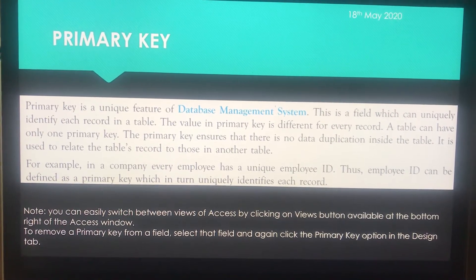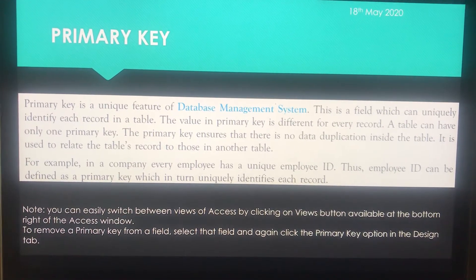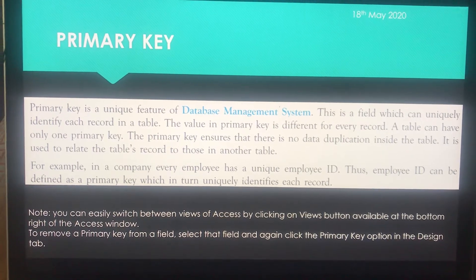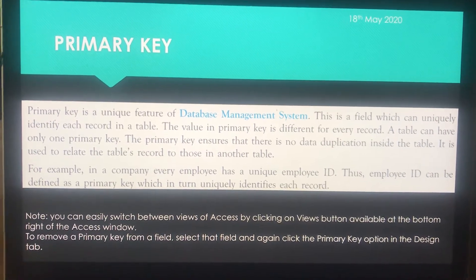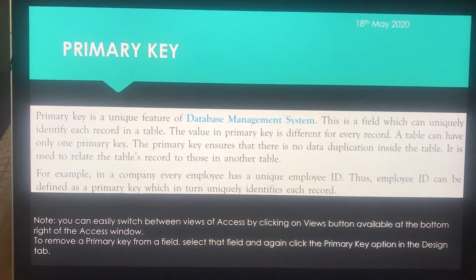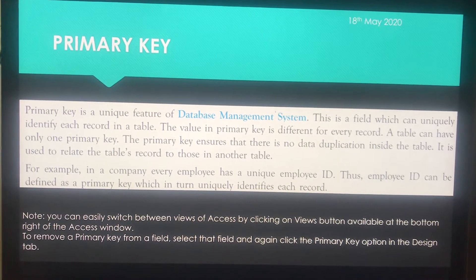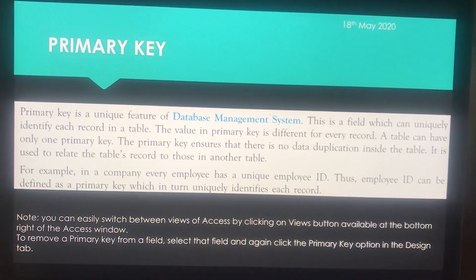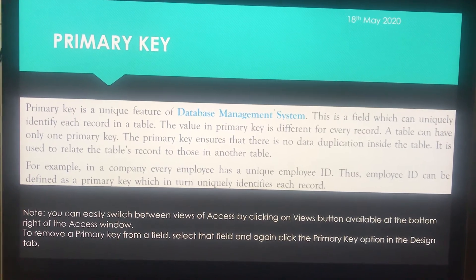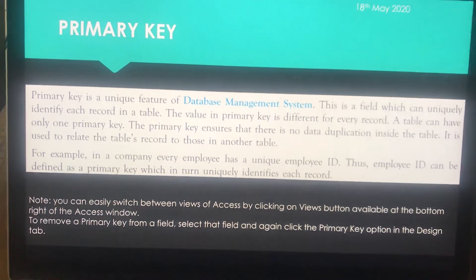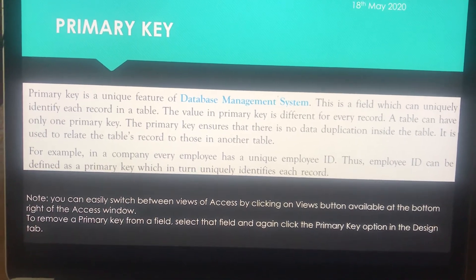For example, in a company every employee has a unique employee ID. Similarly, as a student, every student has a different admission number — no two students can have the same admission number. That is your uniqueness in the school. In the same way, in a company every employee has a unique employee ID, and that employee ID can be defined as a primary key, which uniquely identifies each record.